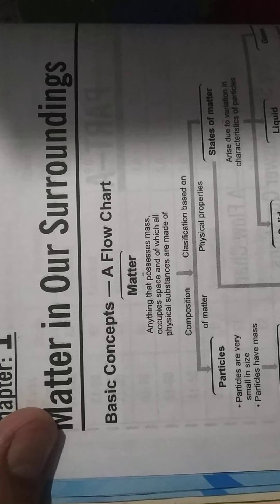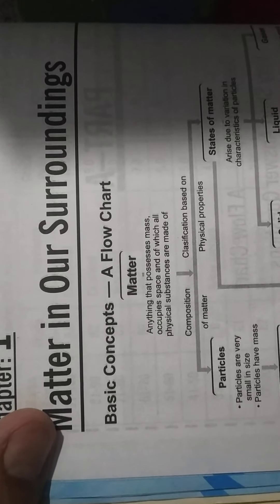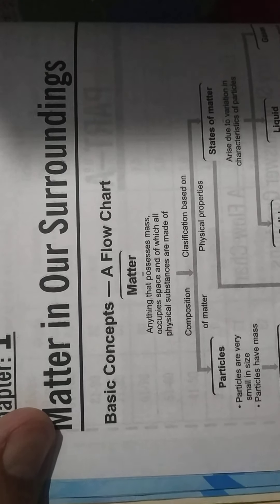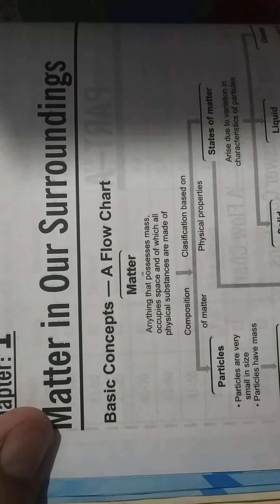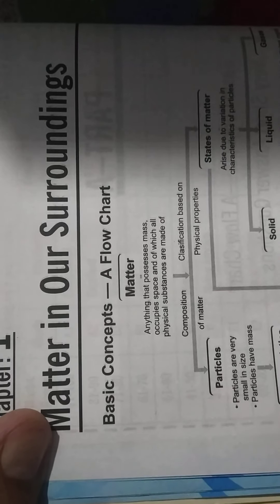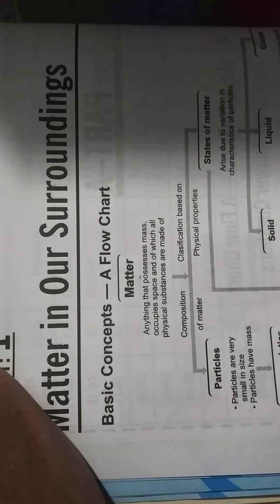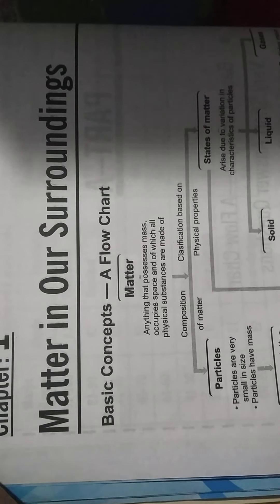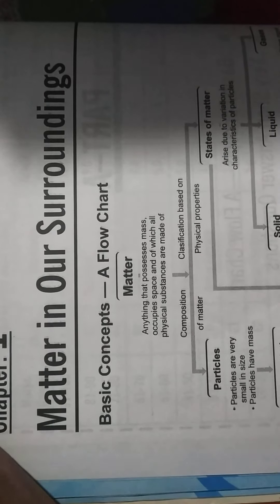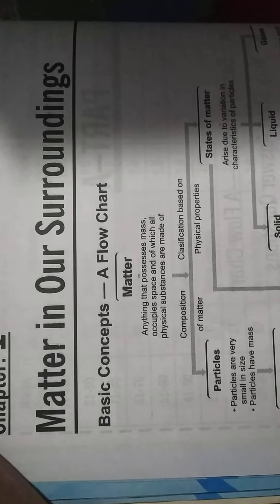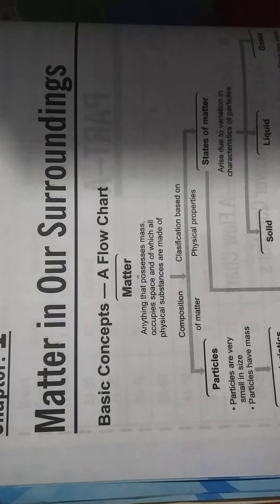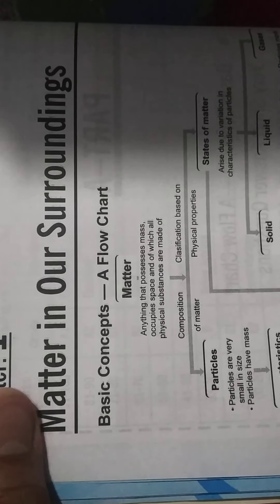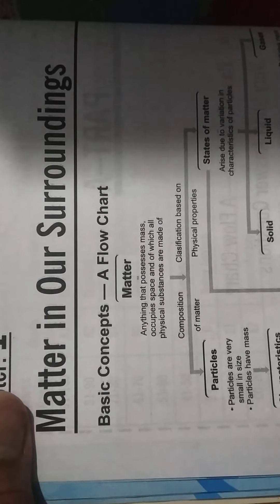Matter is of three types on the basis of physical properties: first is solid, second is liquid, and third is gases.